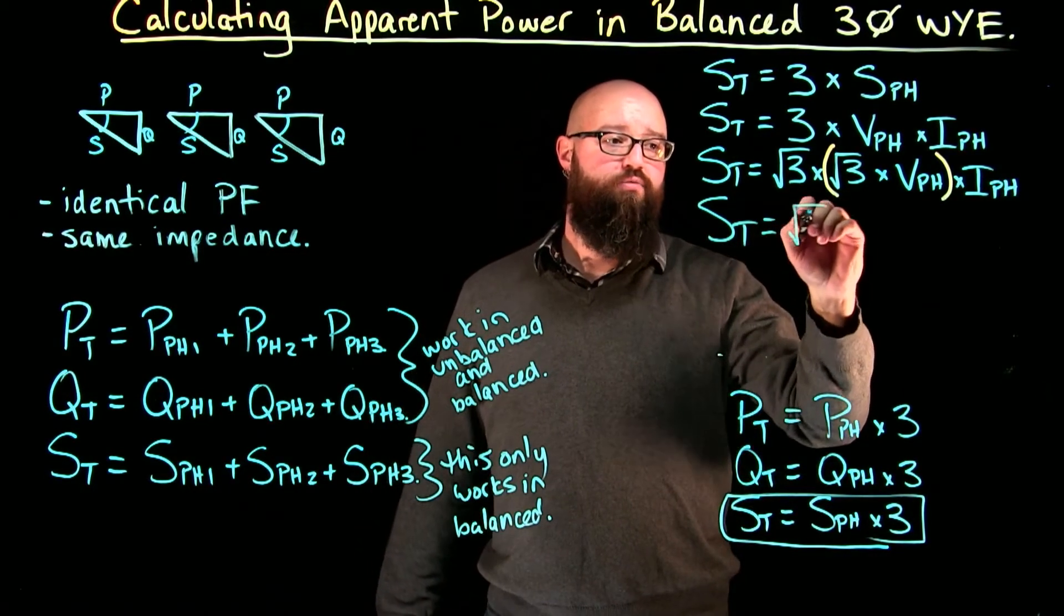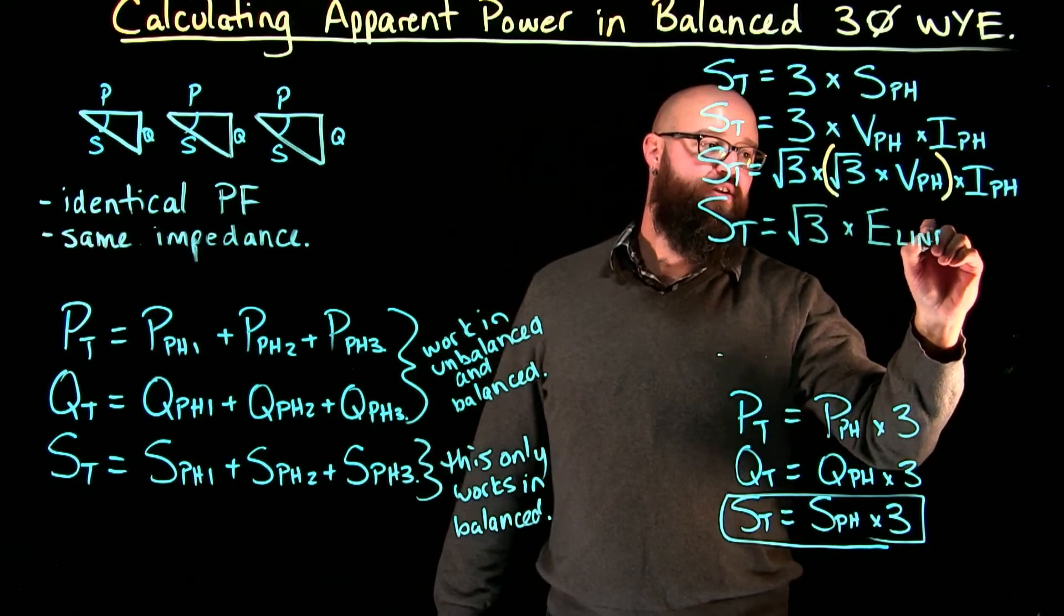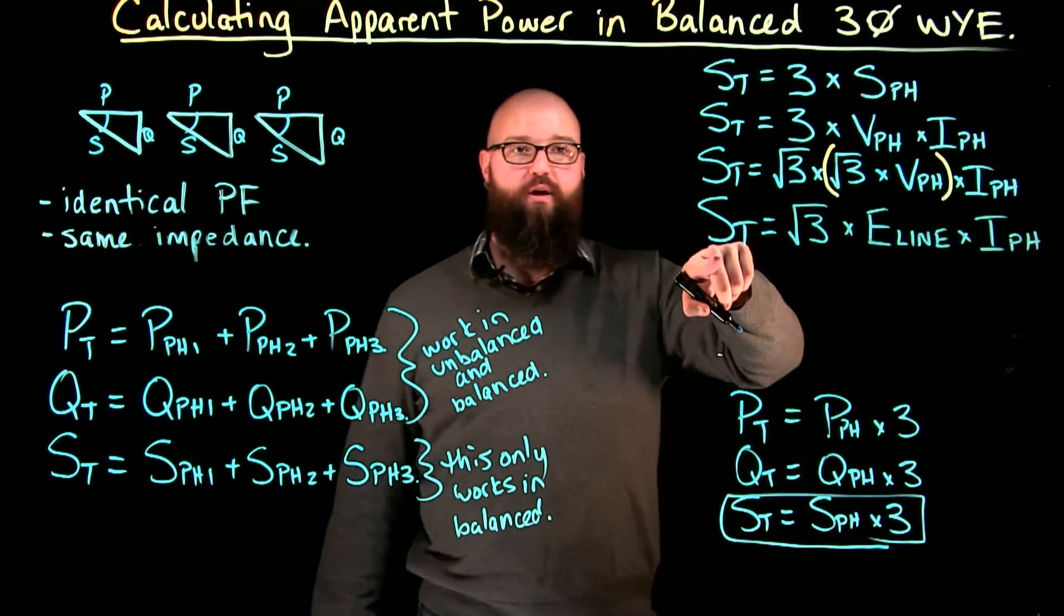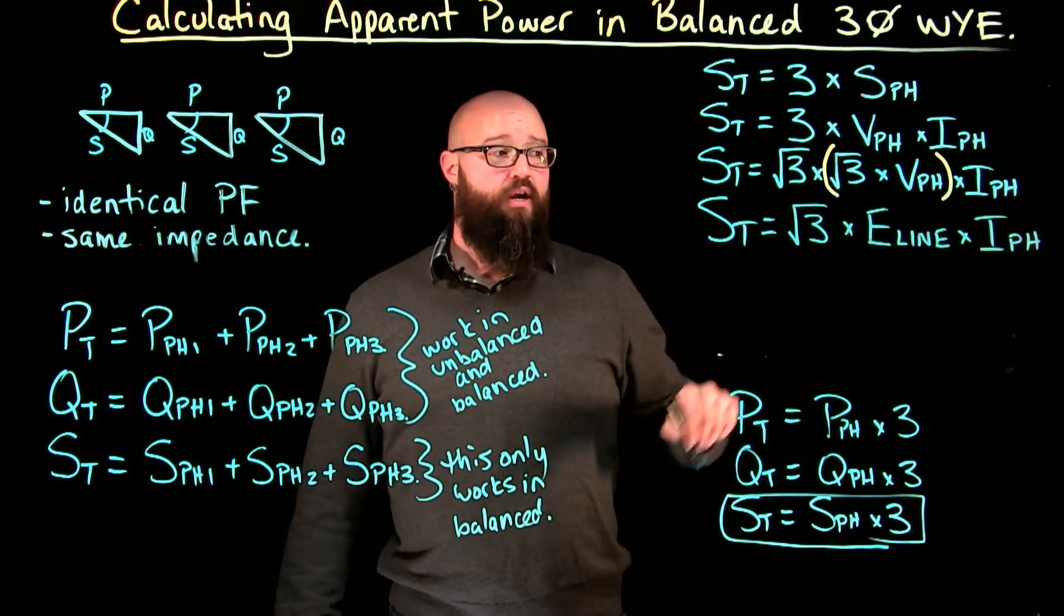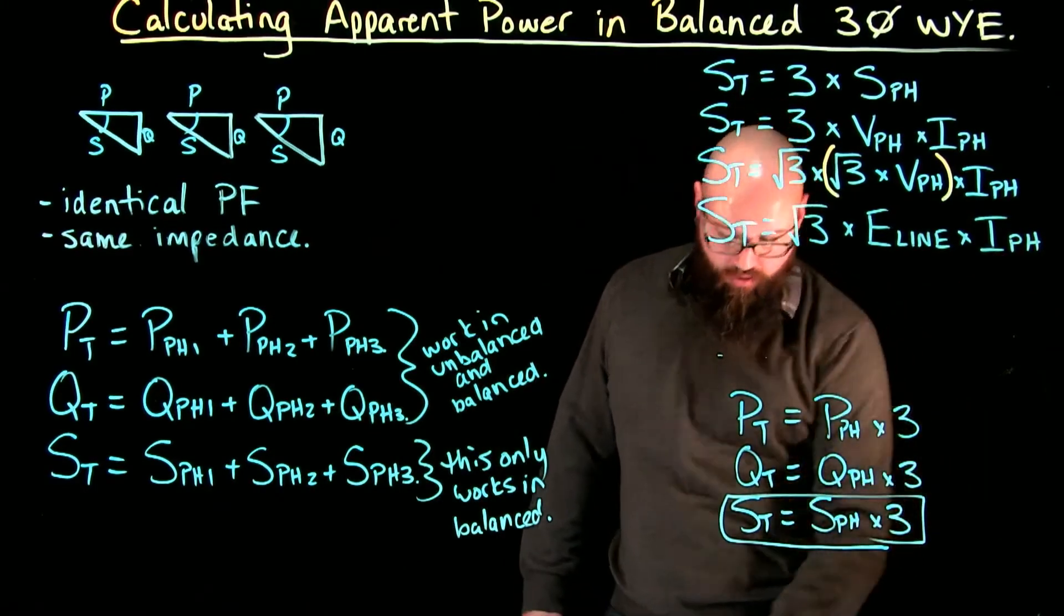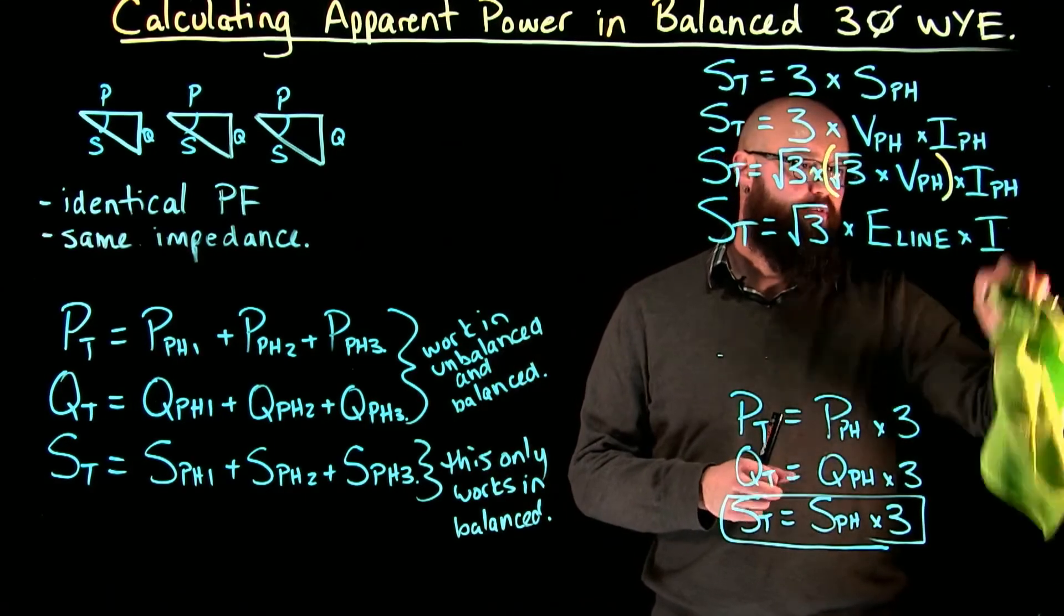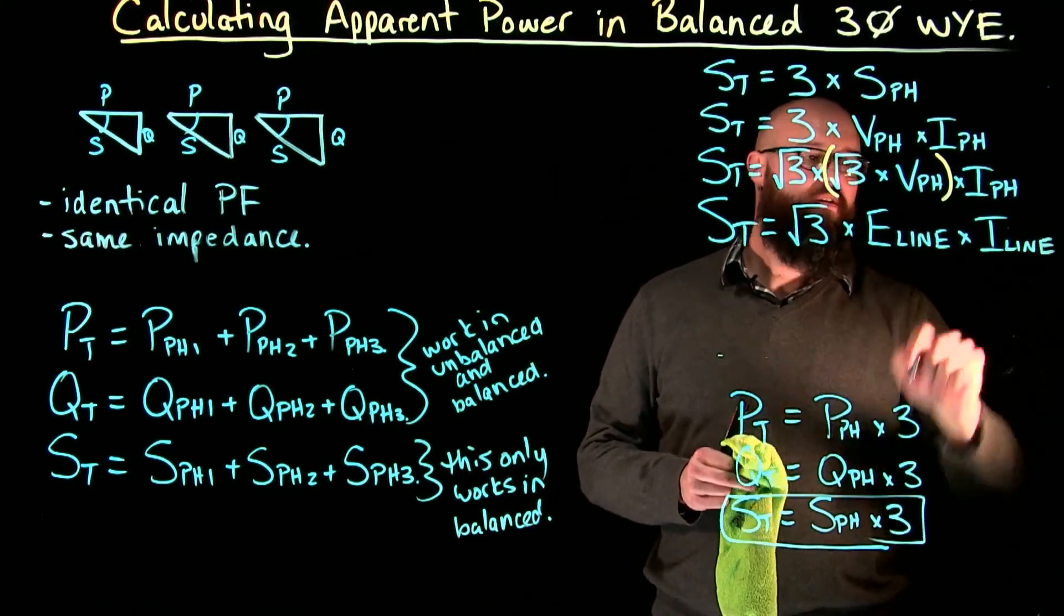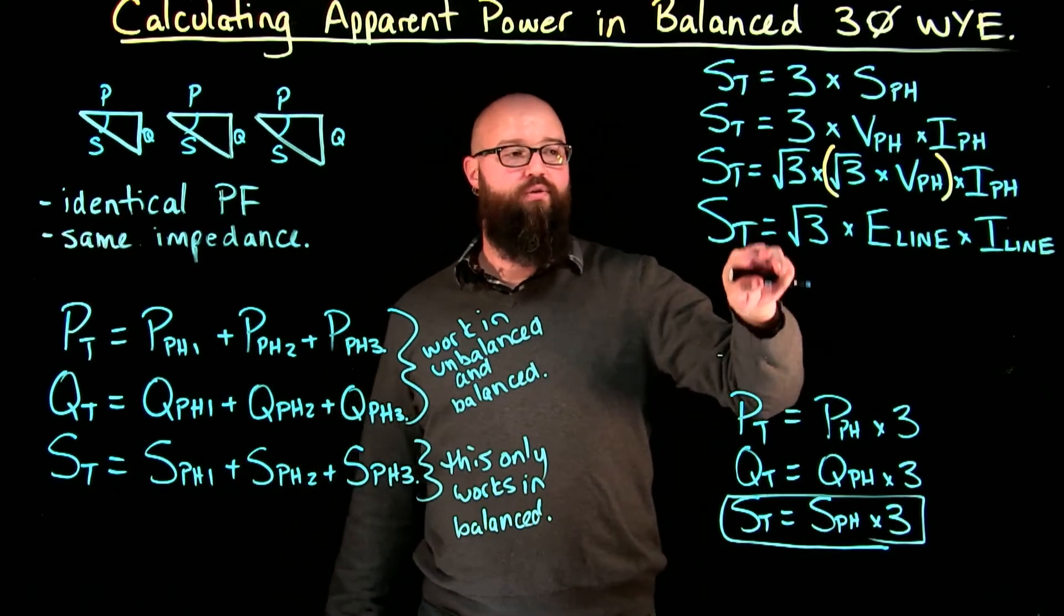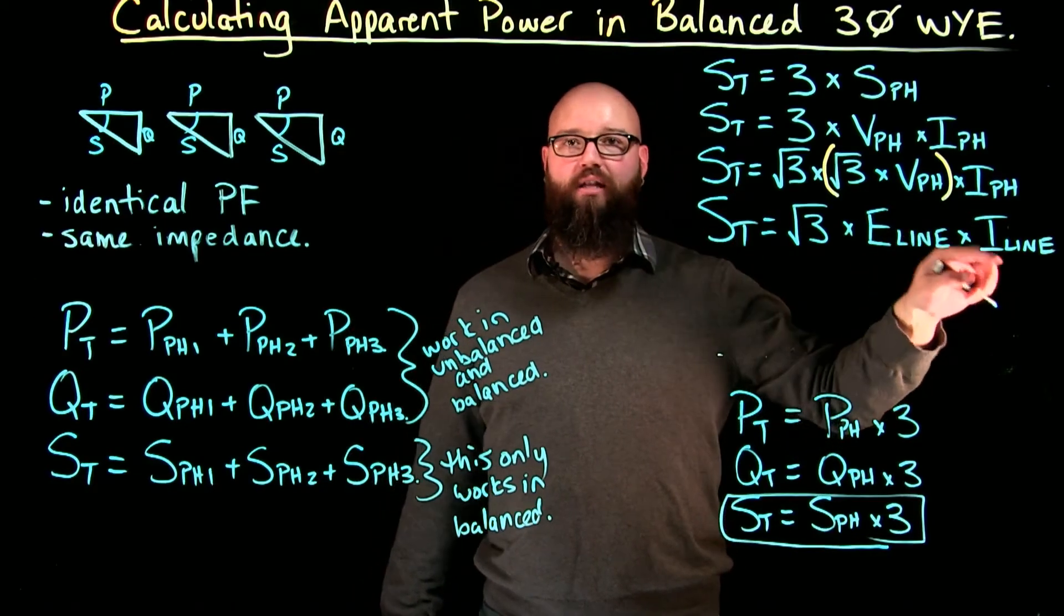So now I can say root three times E line times I phase equals apparent power. And if we remember that I phase is actually equal to I line, we can now make our statement.